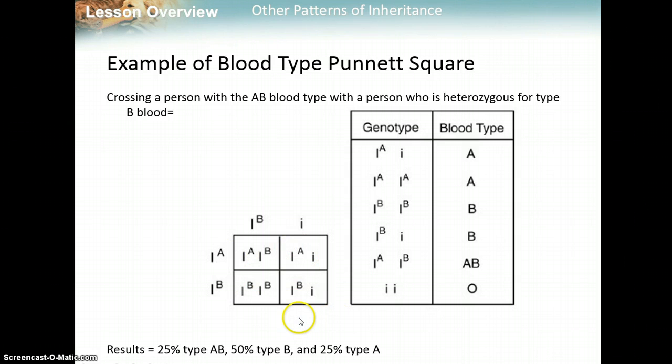Notice they cannot have a type O child. So if somehow they had a baby with type O blood, there might have been some kind of mix-up — a switch in the hospital, which would be bad news.